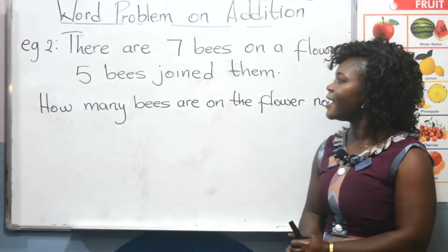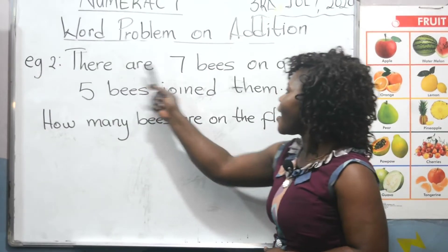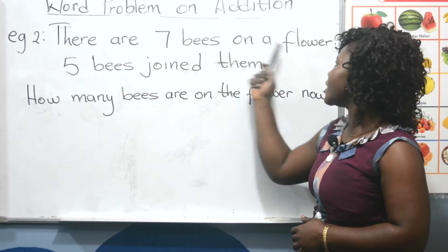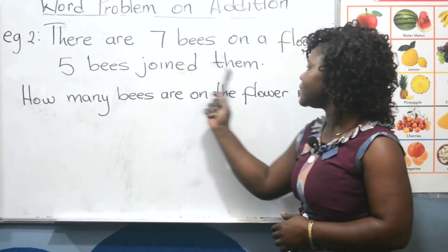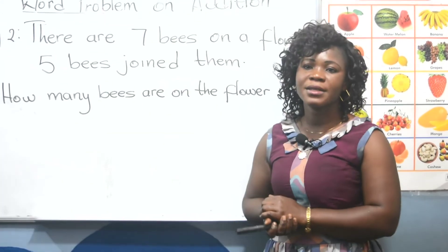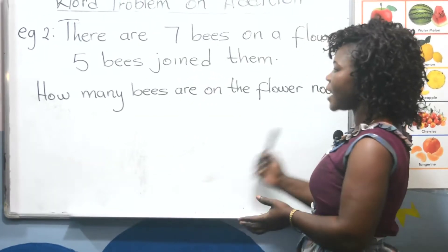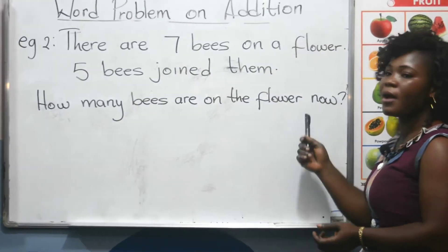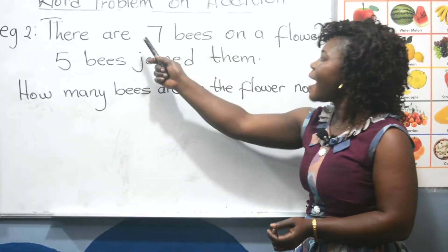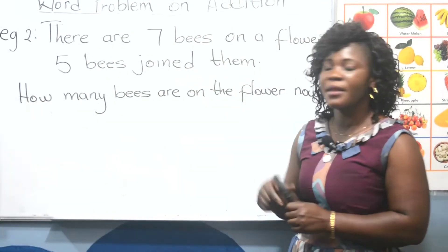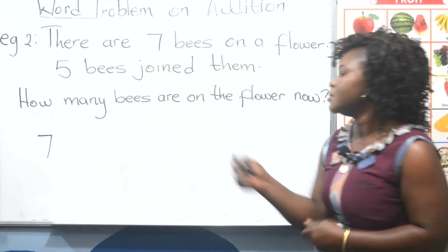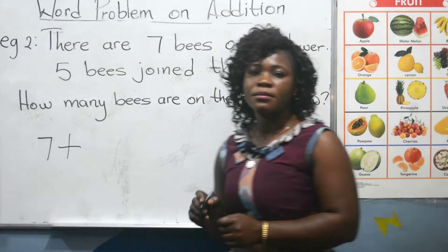Thank you very much. The second example. There are seven bees on a flower. Five bees join them. How many bees are on the flower now? Don't forget, we said word problem is based on questions. That is why we are asking how many bees are on the flower now? So it's a question to you — it's up to you to check the number there. There were seven bees, so we write your seven. And don't forget the addition sign.